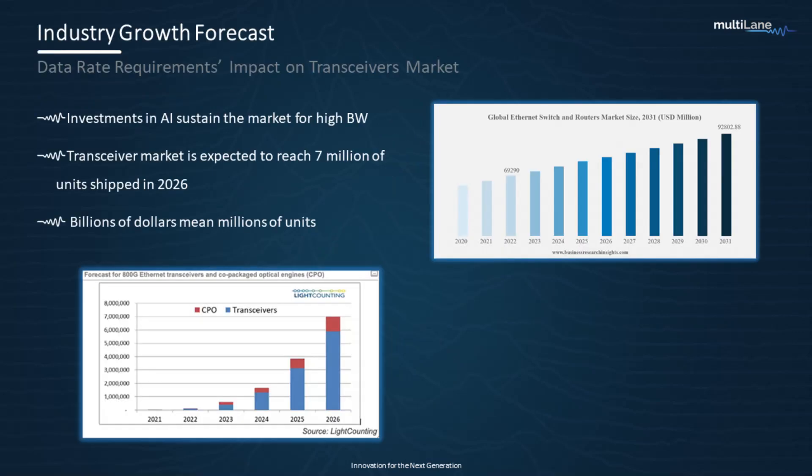Things are growing fast, and if we paint this clear picture of the need to grow, we can see its reflection in the demand for network components. The math works out about the same — billions of dollars mean tens of millions of units. As investments in AI sustain the market for high bandwidth and more data, we see that the switch and router market is set to grow. The transceiver market is also set to grow and is expected to reach around 7 million shipped units by 2026, as we can see in the graph.